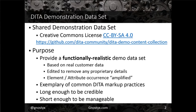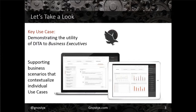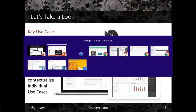It's based on various customers' data who've given permission, with proprietary details removed. I call it amplifying the texture — element occurrences and attribute occurrences are exaggerated a bit to cover a variety of contexts, but it still winds up being about a hundred instances, pretty evenly split between concepts, tasks, and references, with a number of maps for doing different things.